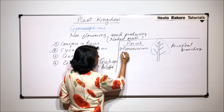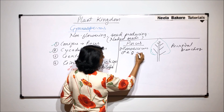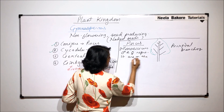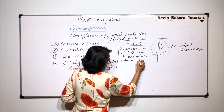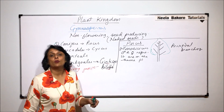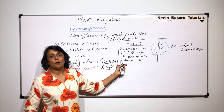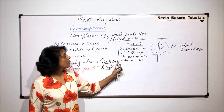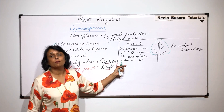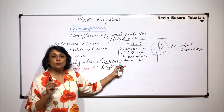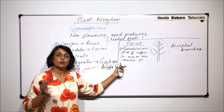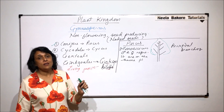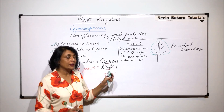Pinus is monoecious, meaning male and female reproductive structures are on the same plant. It is a spore-producing plant, and it produces microspores and megaspores. These spores are produced on the leaves, so those leaves will be called the sporophylls.